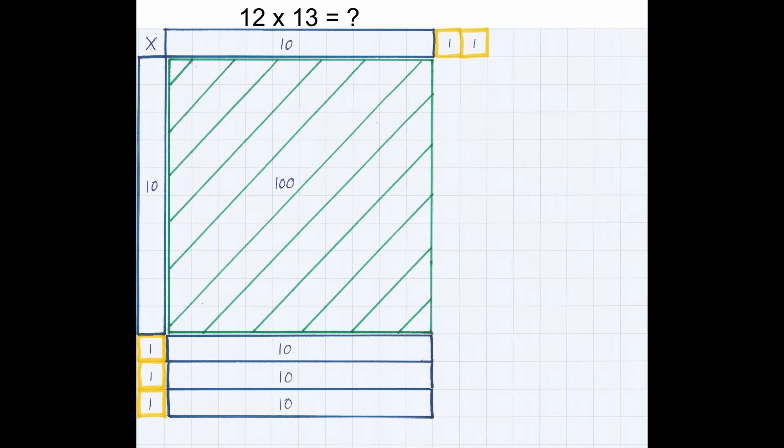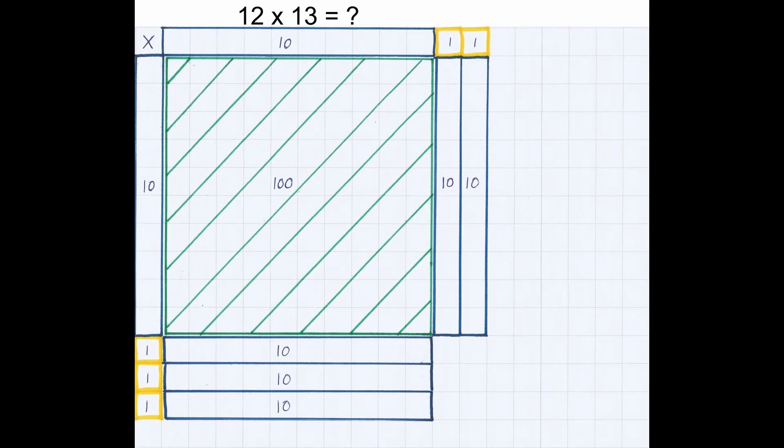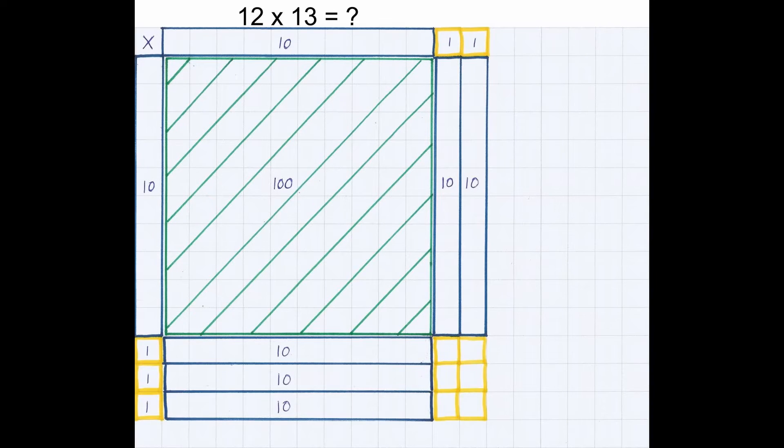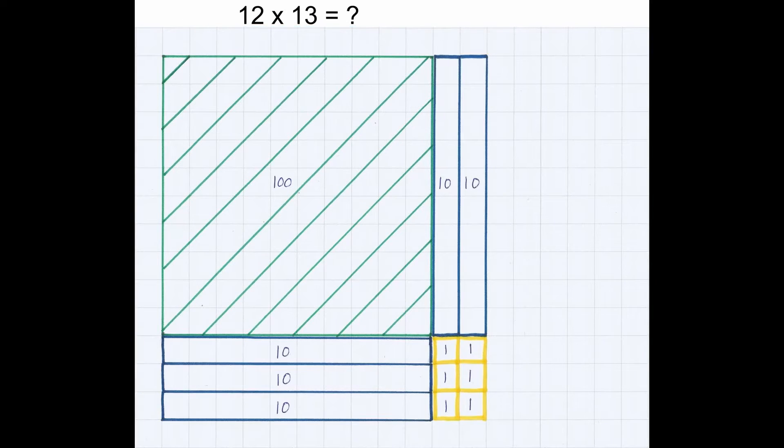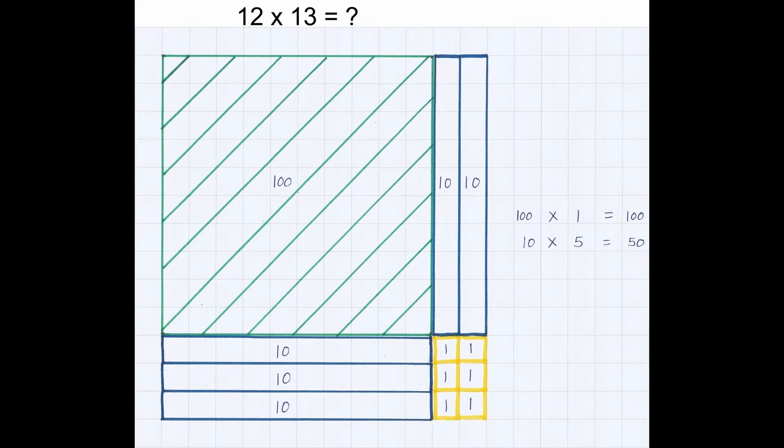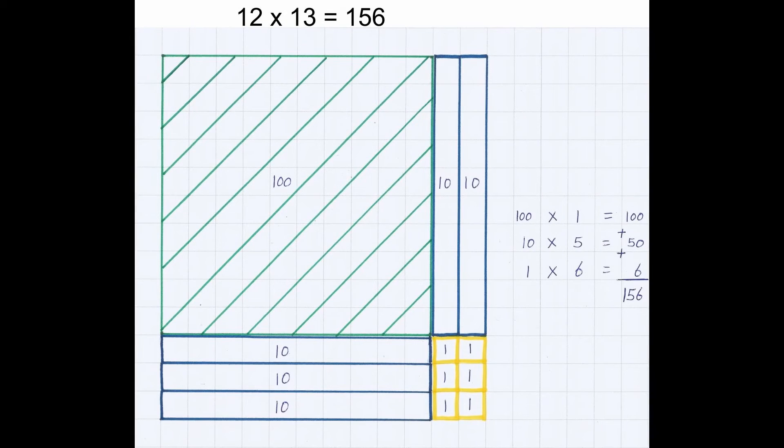Count the tens. And count the units. Remove the multiplicand and the multiplier. And we get the product, which is 156.